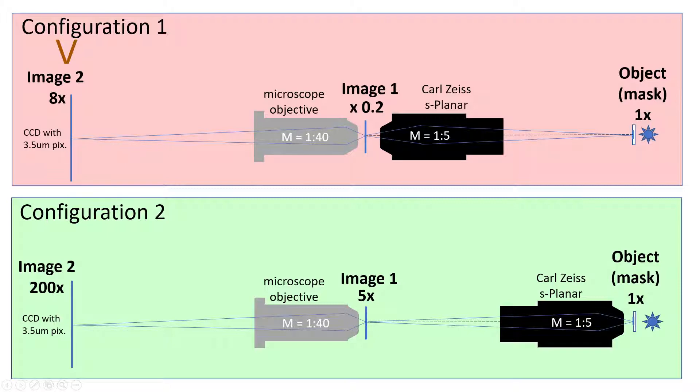So instead I decided to go for configuration 2, where I use the Carl Zeiss lens as a microscope objective. So basically what you do is you magnify the objects on the mask by a factor of 5. And then you look at this image with another microscope objective, which has for example magnification of 40, but it can even be 10. And then in this case, you end up with a much higher magnification in the image plane 2. And also the limiting factor in this case is always the Carl Zeiss lens when it comes to resolution. So basically configuration 2 is a much better configuration to examine the maximum resolution of the Carl Zeiss lens.